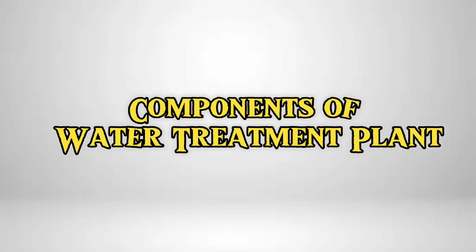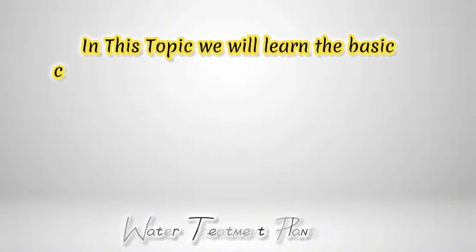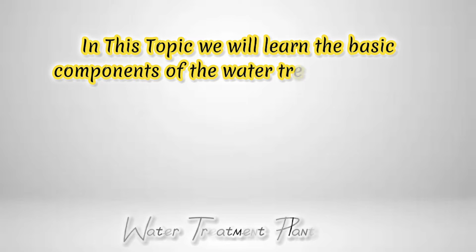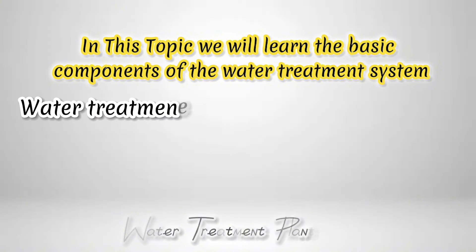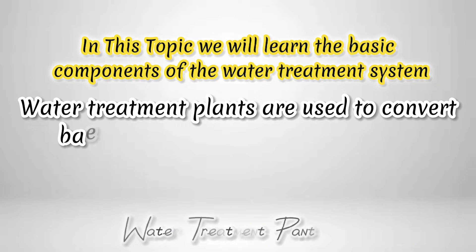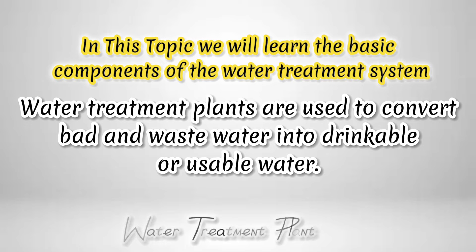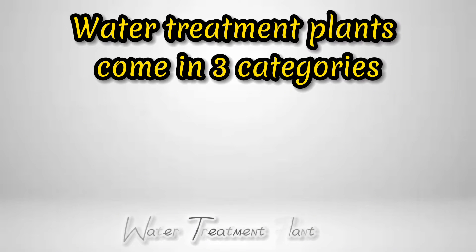Components of Water Treatment Plant. In this topic, we will learn the basic components of the water treatment system. Water treatment plants are used to convert bad and waste water into drinkable or usable water. Water treatment plants come in three categories.